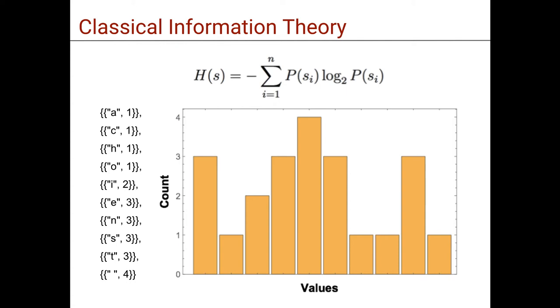We have that A, for example, occurs once, just as C, H and O, followed by the letter I appearing twice, and then E, N, S and T appearing thrice in the sentence, and the space four times in the sequence.